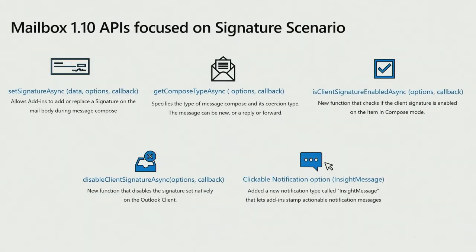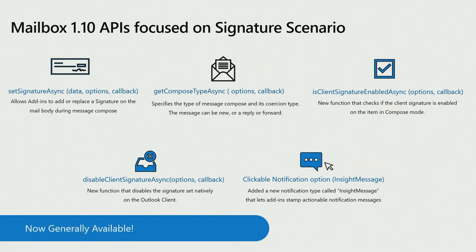I'm also very happy to announce that requirement set 1.10, announced as preview during Ignite, is now generally available. This requirement set is specially suited for building admin-managed signature add-ins. It has four or five APIs focused on the signature scenario. The first is SetSignatureAsync, which allows you to add or replace a signature on an email body — your signature can also have an embedded image, or you can post the image, and SetSignatureAsync will work.